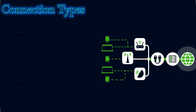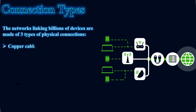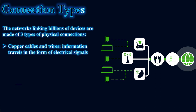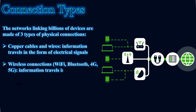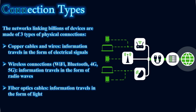There are three main connection types. Networks linking billions of devices are made of three types of physical connection. First: copper cables and wires, where information travels as electrical signals. Second: wireless connections — Wi-Fi, Bluetooth, 3G, and 5G — where information travels as radio waves. Third: fiber optic cables, where information travels in the form of light.